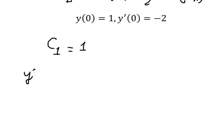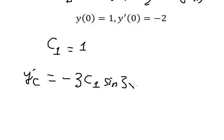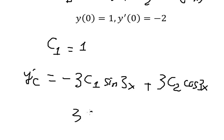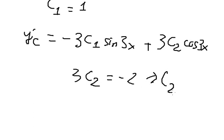Now we take the first derivative. The first derivative of c1 cosine 3s gives negative 3c1 sine 3s. The first derivative of c2 sine 3s gives 3c2 cosine 3s. When s equals zero, we substitute zero, so we have only 3c2. And 3c2 equals negative 2, so c2 equals negative 2 over 3.